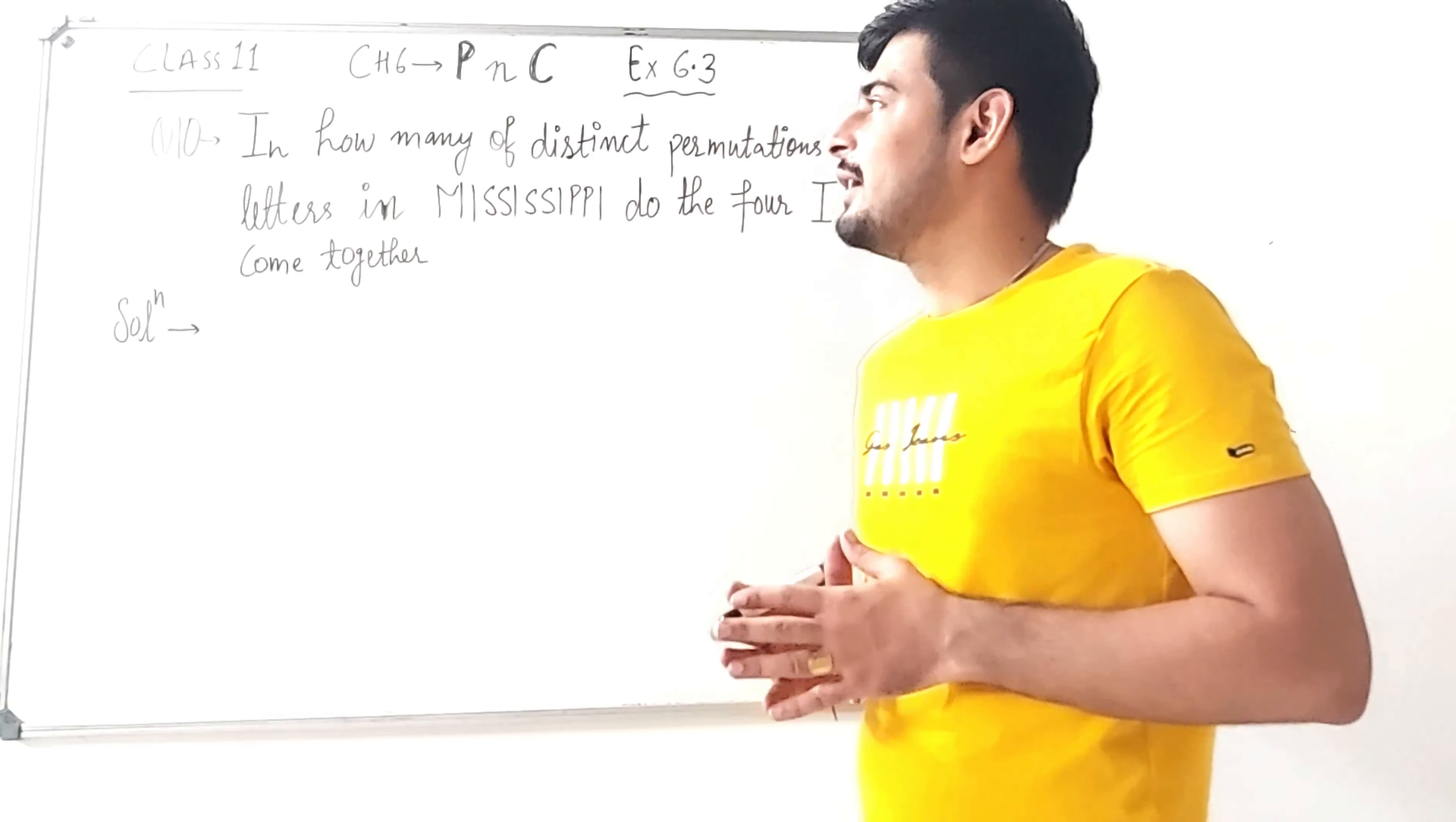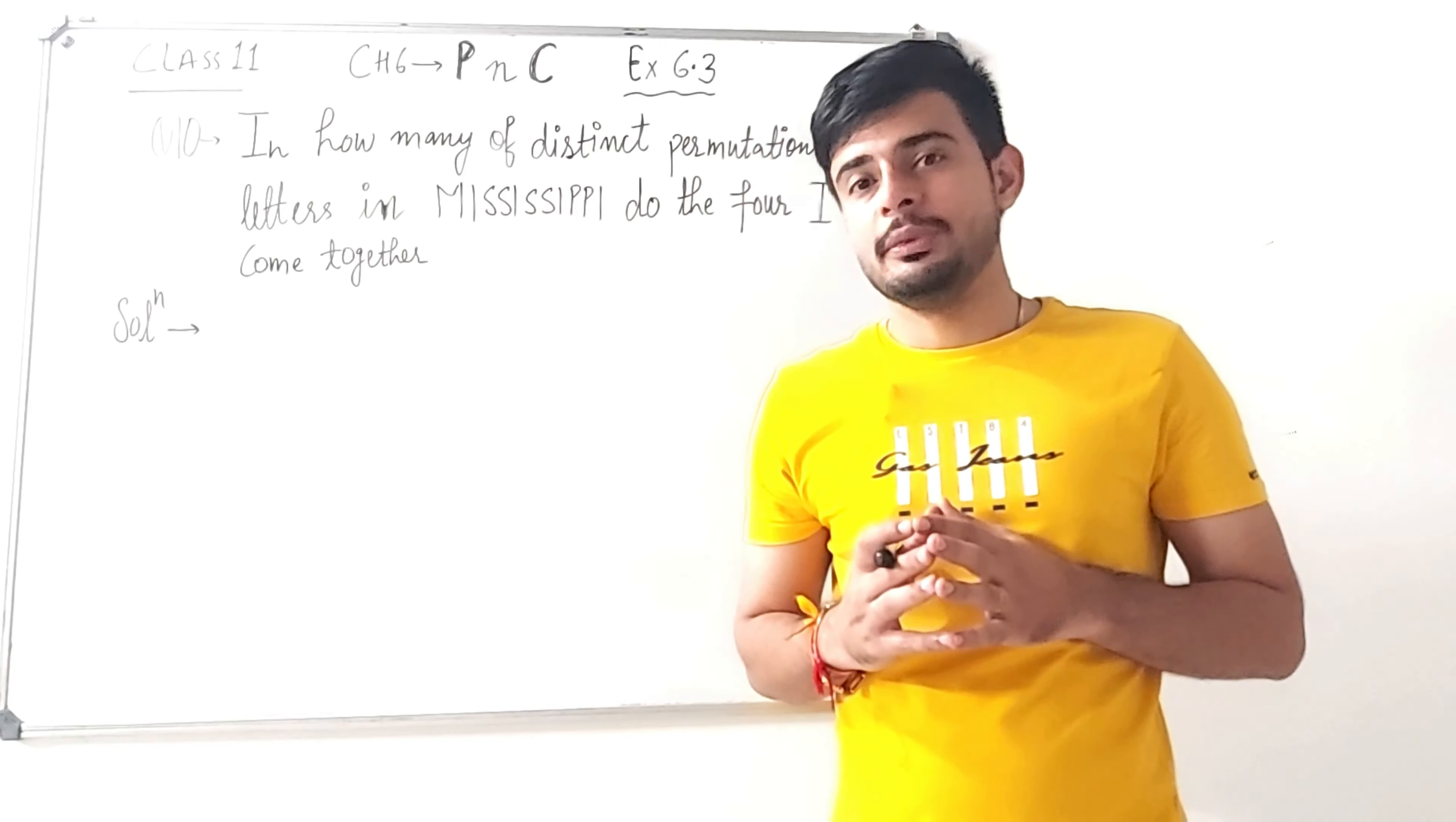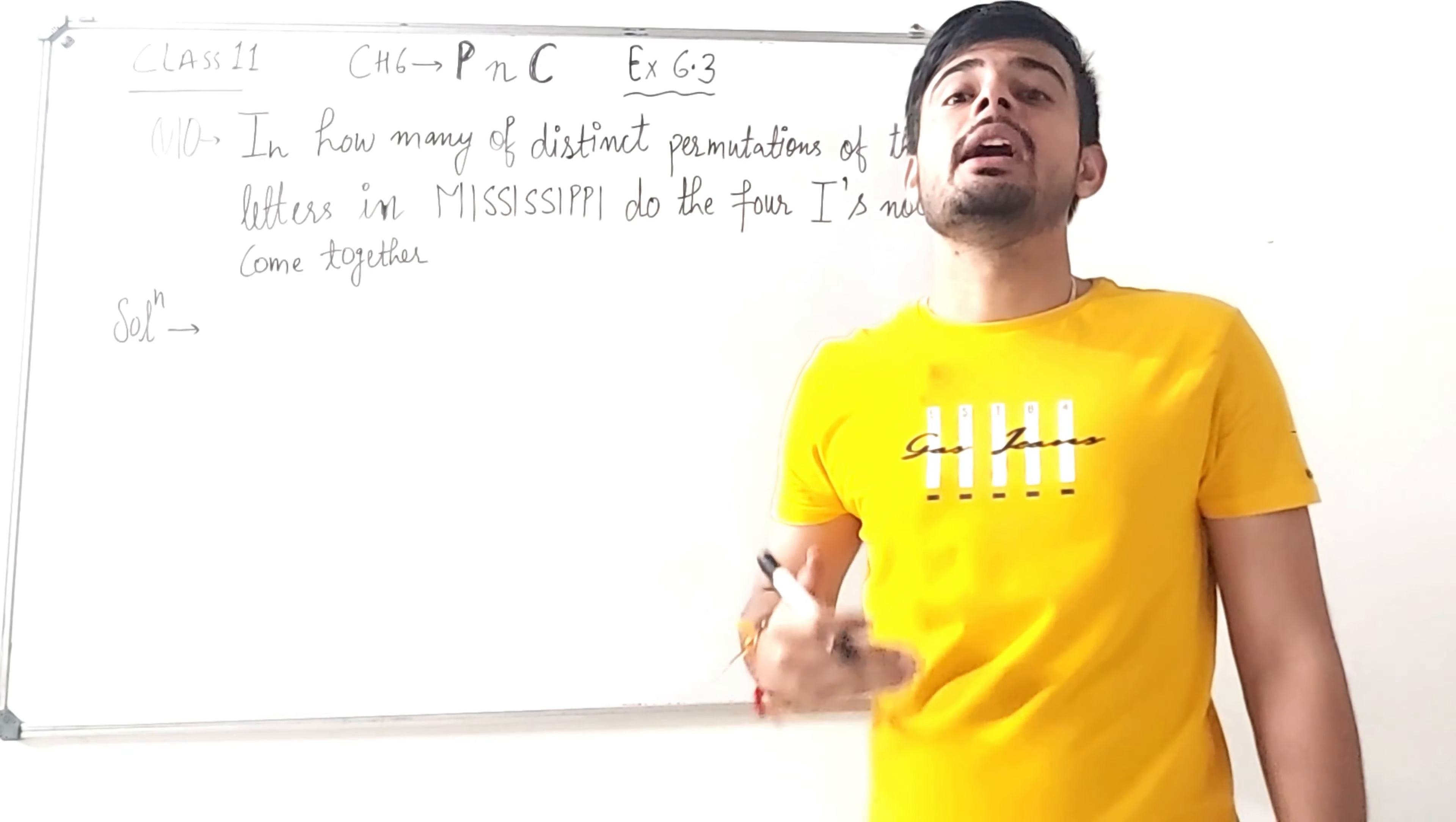Question number 10 is saying, in how many ways of distinct permutations of the letters in Mississippi do the four I's not come together? So here we have the letters of Mississippi word. We have to arrange them in ways where these four I's not come together.